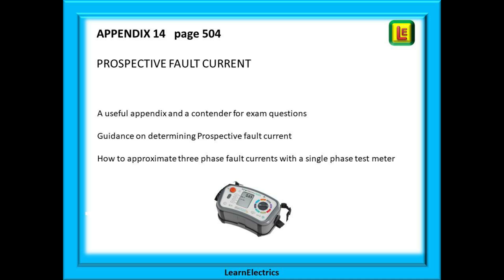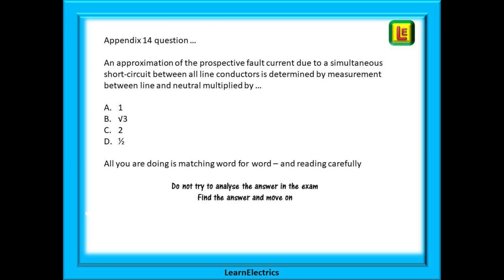Appendix 14 is about prospective fault current. How do we measure three-phase prospective fault current if our test meters can only test a single phase? The answers are here in appendix 14 — a popular appendix for exam questions. Do not try to remember all the information, just remember how to find it. A typical question might ask: an approximation of the prospective fault current due to a simultaneous short circuit between all line conductors is determined by a measurement between the line and neutral multiplied by — and all you are doing is matching word for word. If you've read carefully, the answer is two.